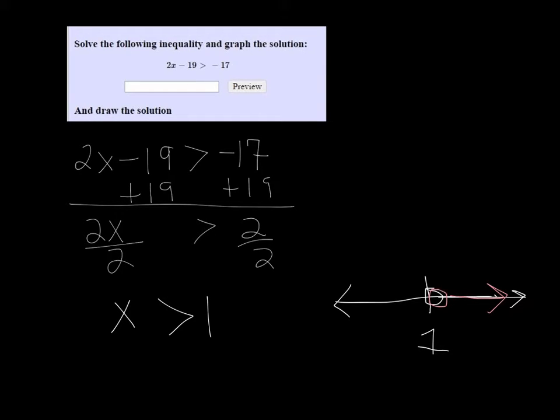Open dot, arrow going to the right to indicate it's all numbers greater than 1, but not including 1. A closed dot would indicate that we're including 1.